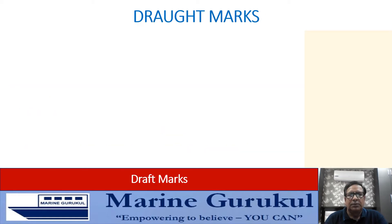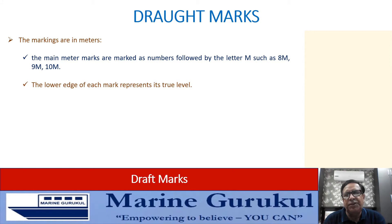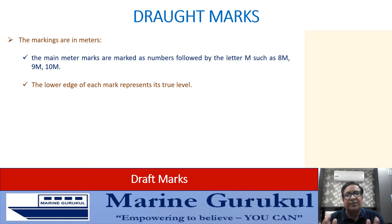How are the drafts marked, and what is the size of the markings? In present-day ships, markings are in meters and decimeters or meters and centimeters. The main meter marks are marked as numbers followed by a capital M — such as 8M representing the 8-meter mark, 9M for 9 meters, and 10M for 10 meters. The lower edge of each mark represents its true level.